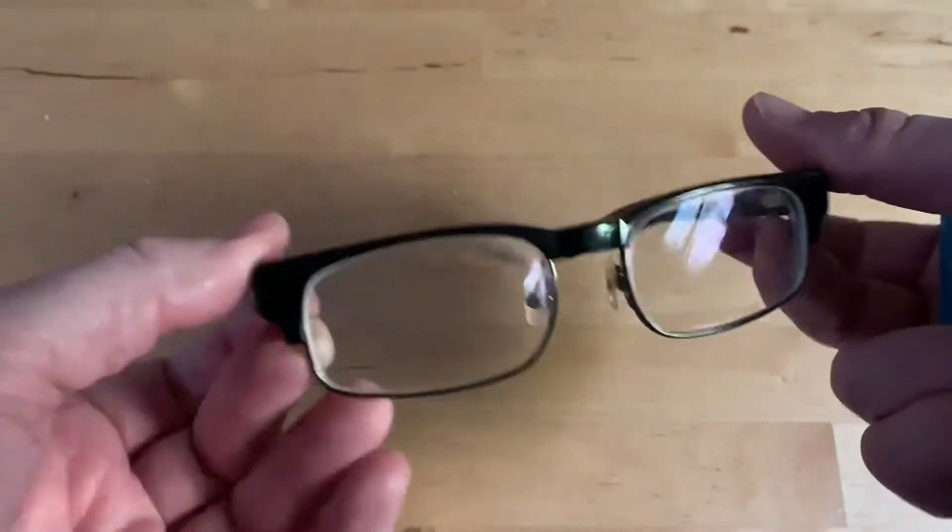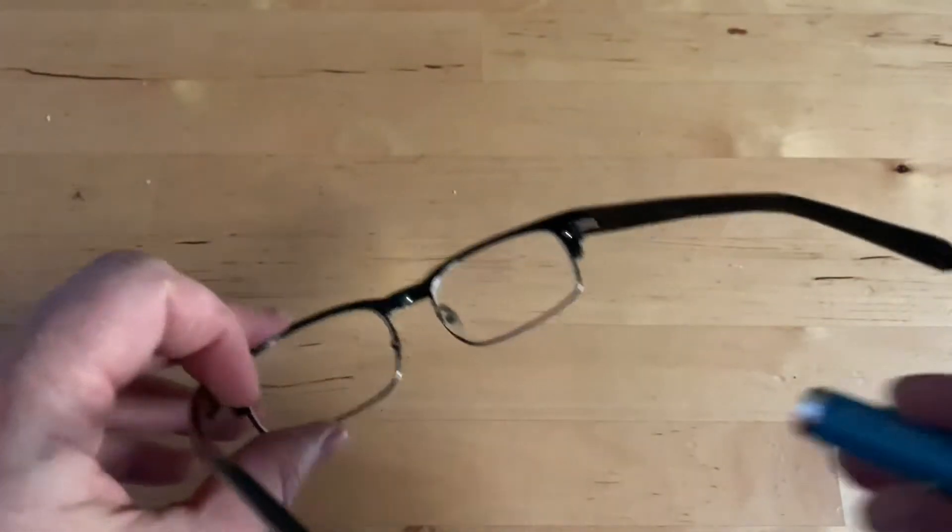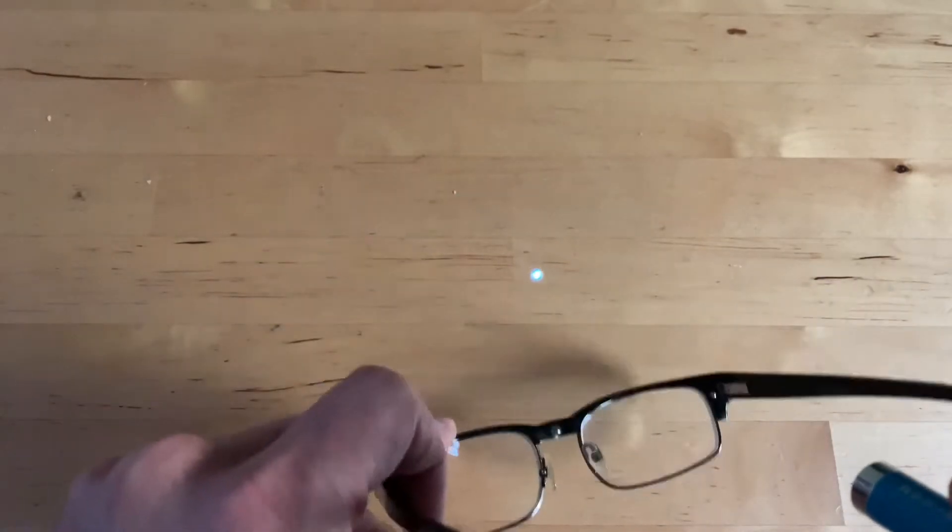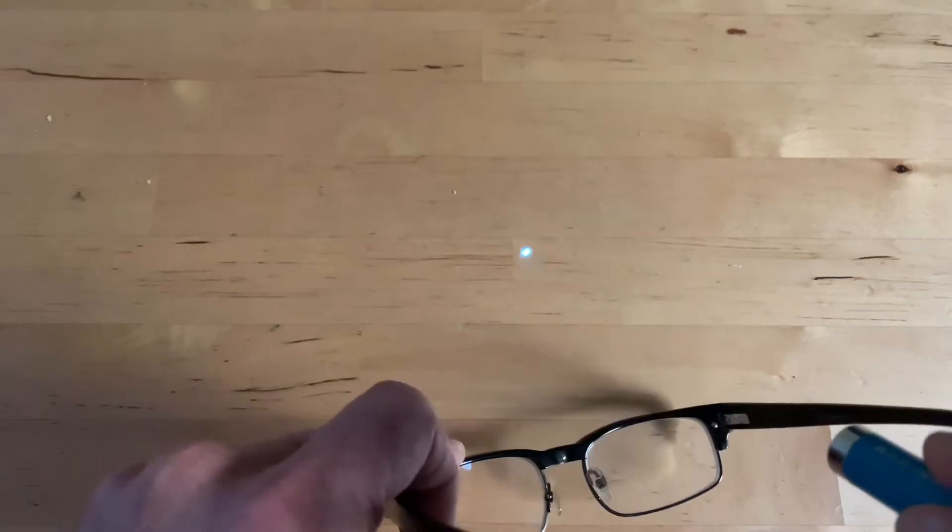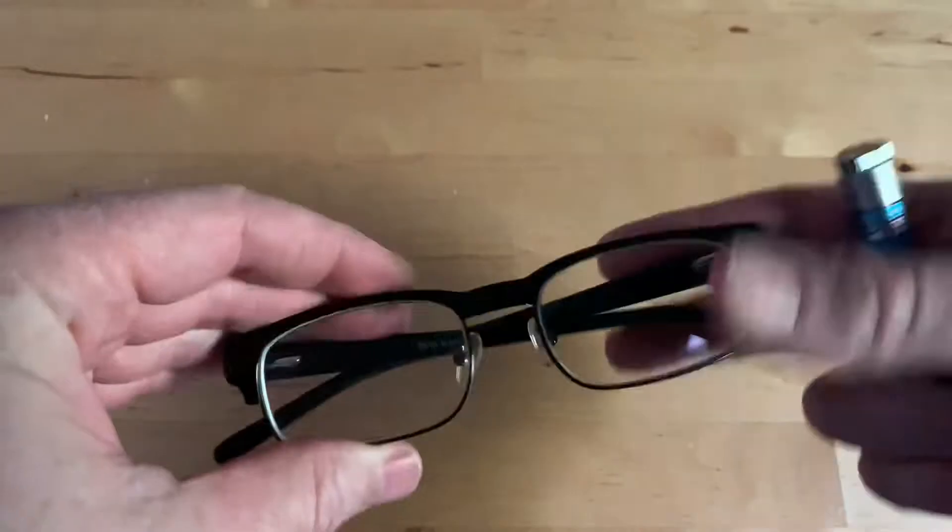These are regular prescription glasses with UV coating and anti-glare. If I shine my laser through it, it really doesn't make much difference. That's through it and that's directly on the table. So there is no proactive blue blocking in regular prescription glasses.